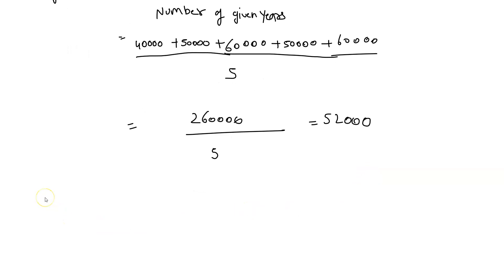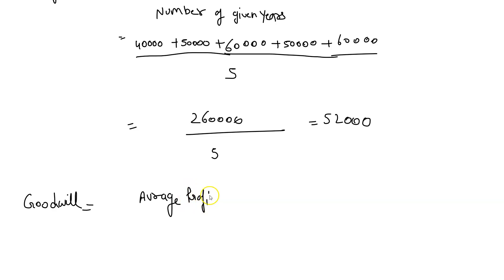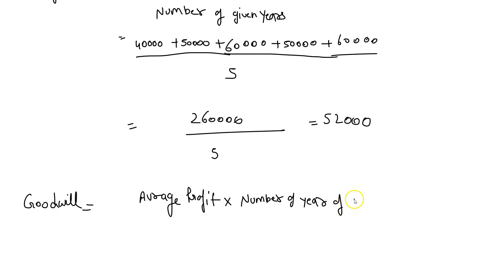Now what do you have to get? Goodwill. So, to calculate goodwill there is one formula: Goodwill is equal to Average Profit multiplied by Number of Years of Purchase.